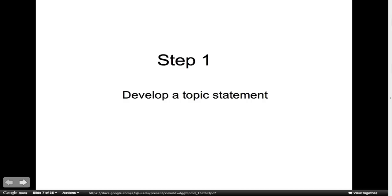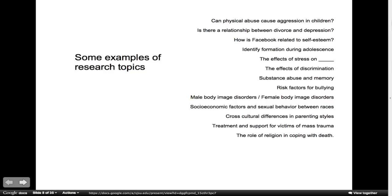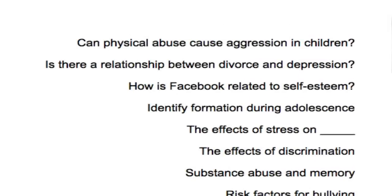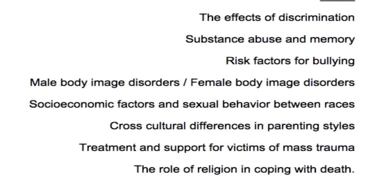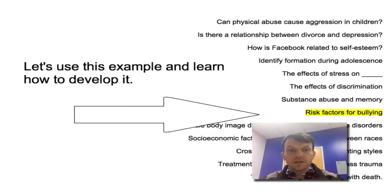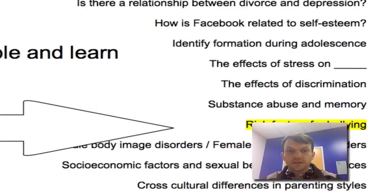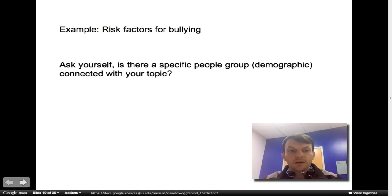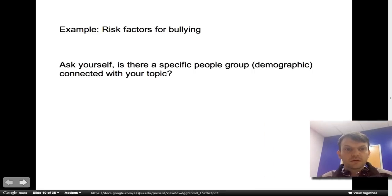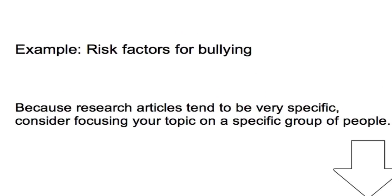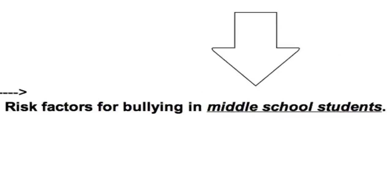Your first step is to develop a research topic statement. Here are some examples of research topics. Let's use this example and learn how to develop it: risk factors for bullying. When you decide upon a topic, you need to ask yourself: is there a specific people group, also known as a demographic, connected with your topic? Because research articles tend to be very specific, consider focusing your topic on a specific group of people. With our example of risk factors for bullying, we would add a group of people — middle school students — and our topic is now risk factors for bullying in middle school students.